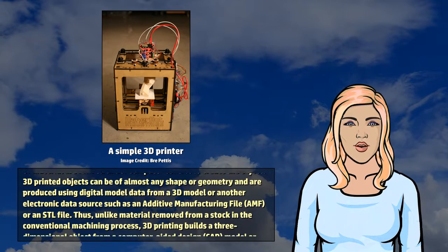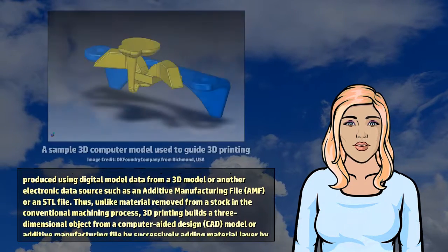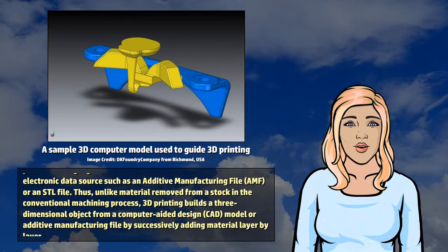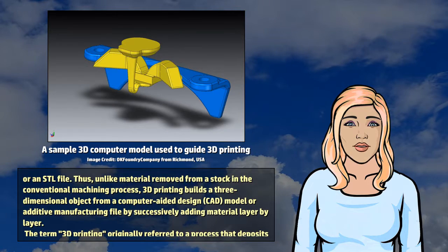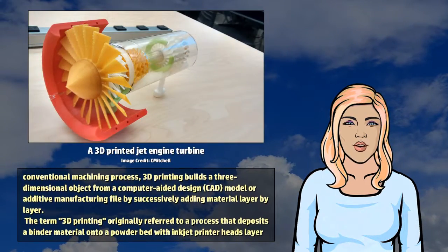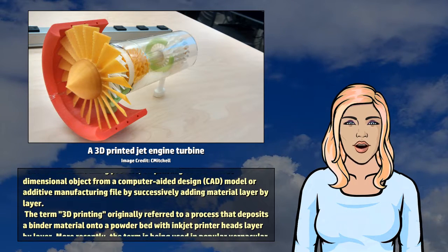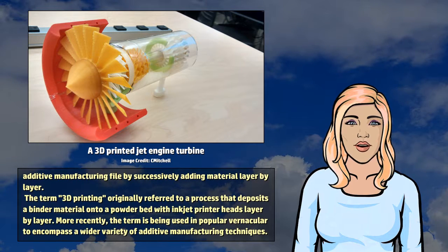Thus, unlike material removed from a stock in the conventional machining process, 3D printing builds a three-dimensional object from a computer-aided design model or additive manufacturing file by successively adding material layer by layer. The term 3D printing originally referred to a process that deposits a binder material onto a powder bed with inkjet printer heads layer by layer.